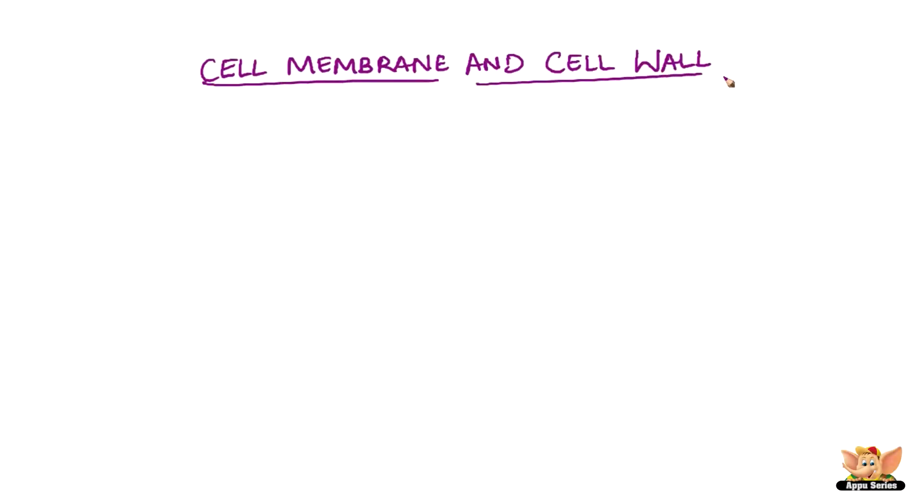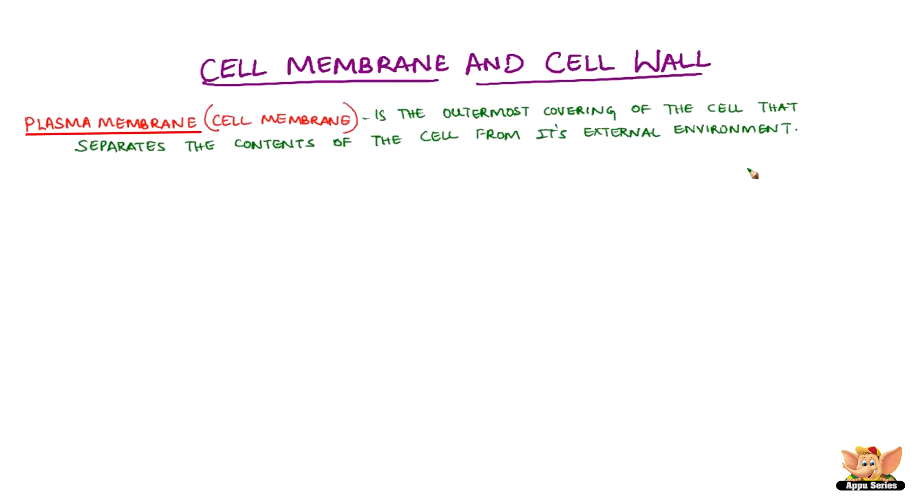Cell membrane, also called plasma membrane, is the outermost covering of the cell that separates the contents of the cell from its external environment.